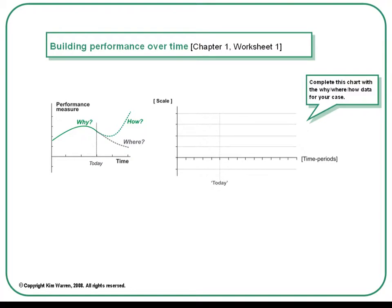Chapter 1 outlines the importance of understanding how performance for an organisation is changing over time — why performance has come to the point that it has today, where it's going if strategy continues as it is, and how to make substantial improvement. It's rather straightforward then to take part of your class discussion to complete this chart on the right. Ask the class to help sketch in the history of the organisation's performance, discuss where that performance trajectory might go in future, and discuss what a reasonable aspiration would be for improving that future performance.